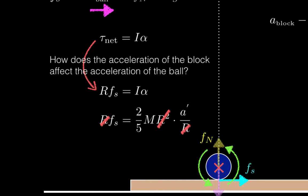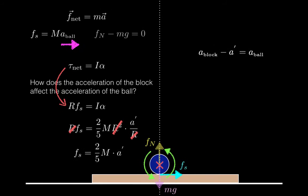After canceling the R's, I have an equation relating the force of static friction to A prime. But F net equals MA also gave me an equation that involved the force of static friction. So putting these two together, I find that the acceleration for the ball relative to the table is equal to 2 fifths the acceleration of the ball relative to the board.